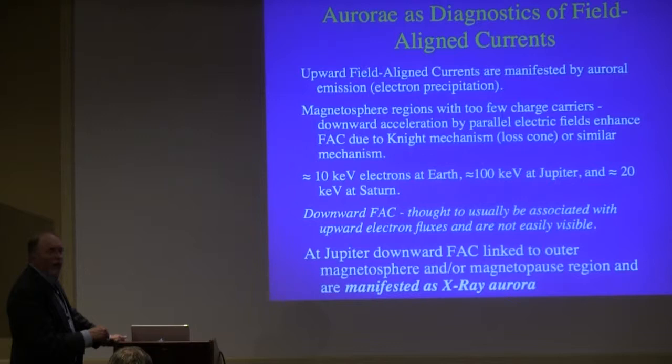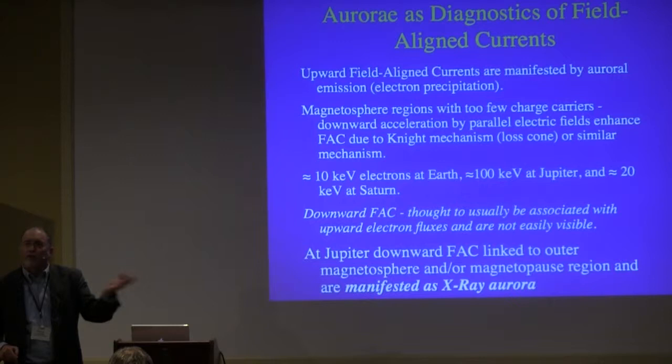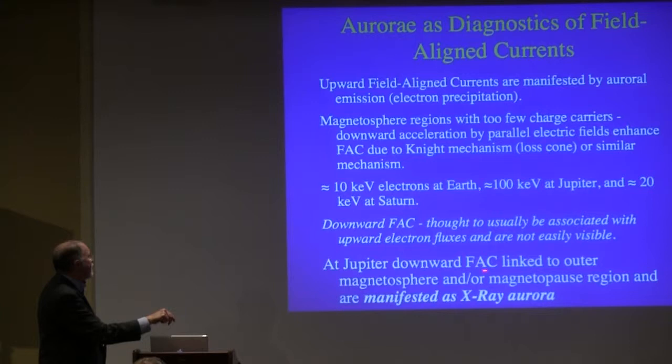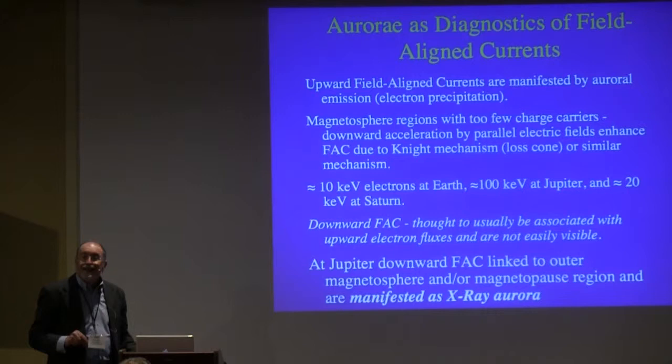At least at Earth, they're associated with these quiet, upwardly flowing electrons, which are not that visible remotely. Sure, you fly a spacecraft back and forth across these things — you could do that at Earth — but you see lots of things you don't see at the outer planets where you're stuck with remote observations, or spacecraft in the equatorial plane. Juno's going to be different. But at Jupiter, we think these downward currents are linked to the outer magnetosphere and magnetopause region, and at least some of it is manifested as X-ray emission.